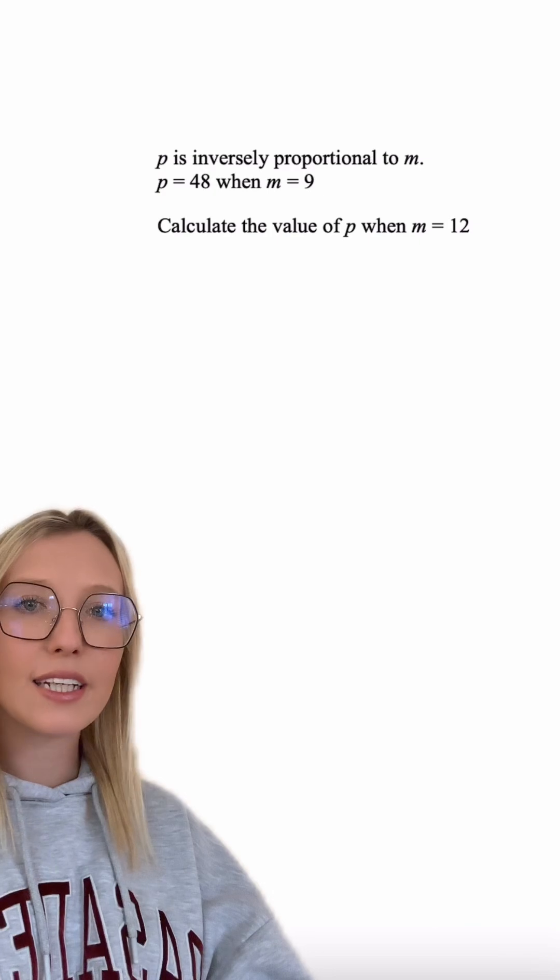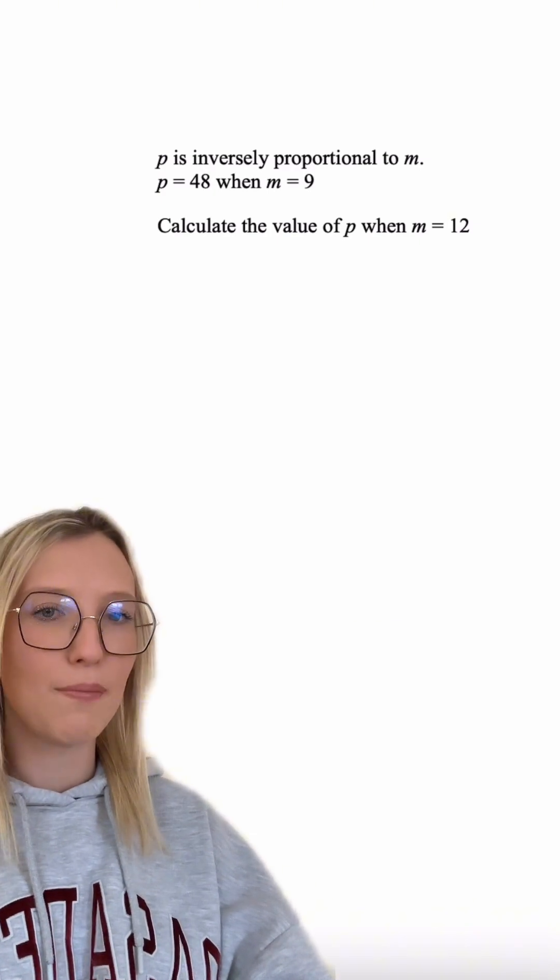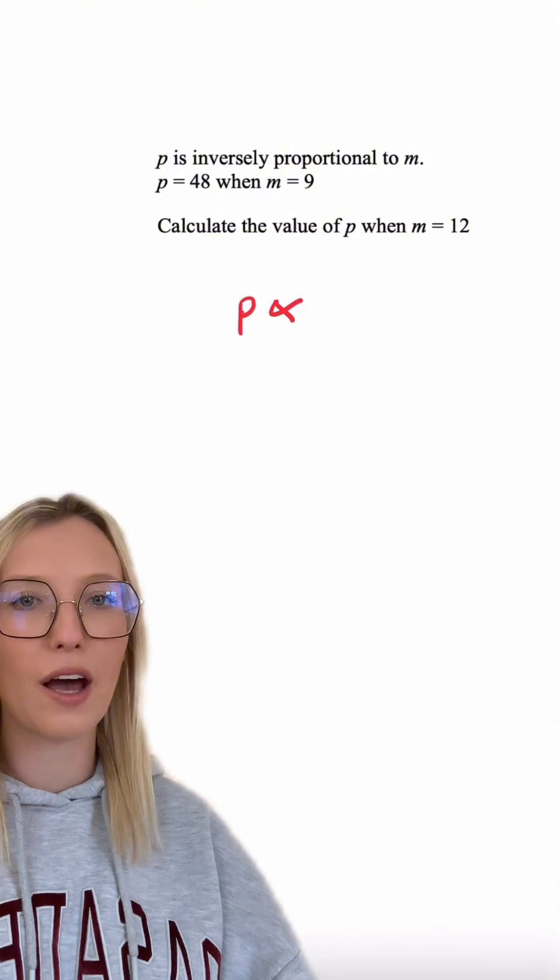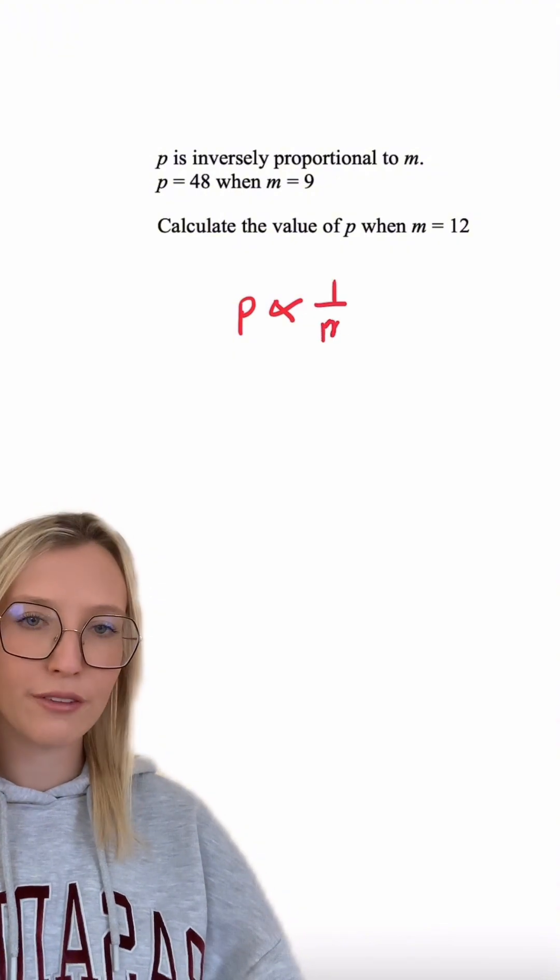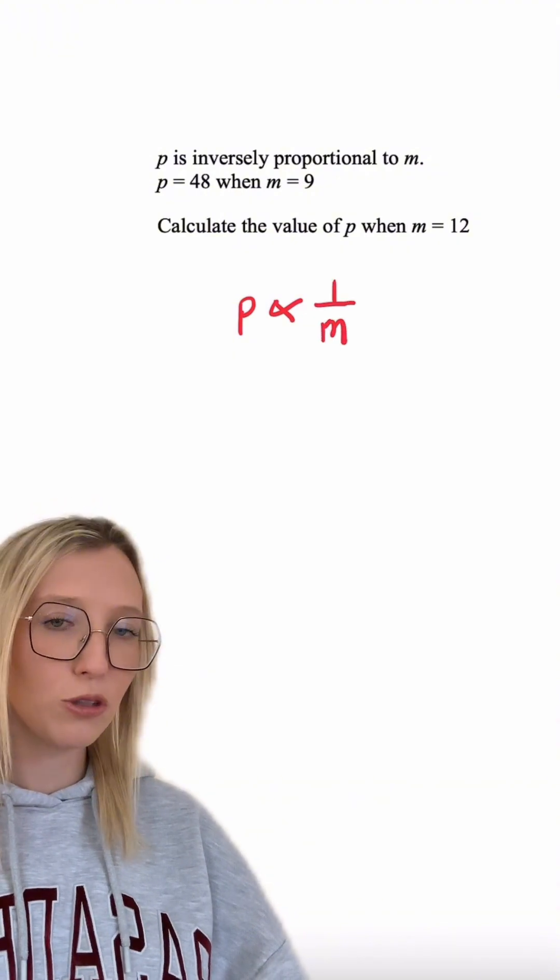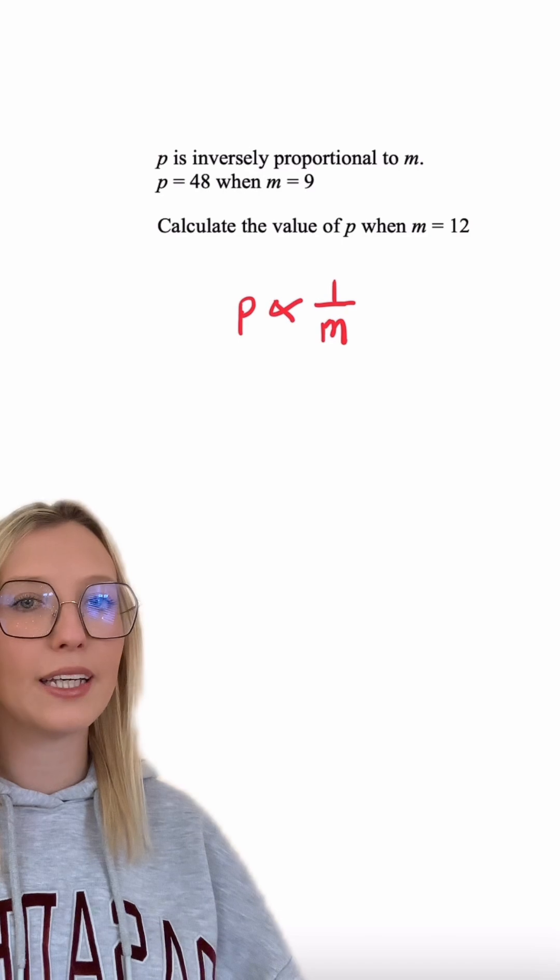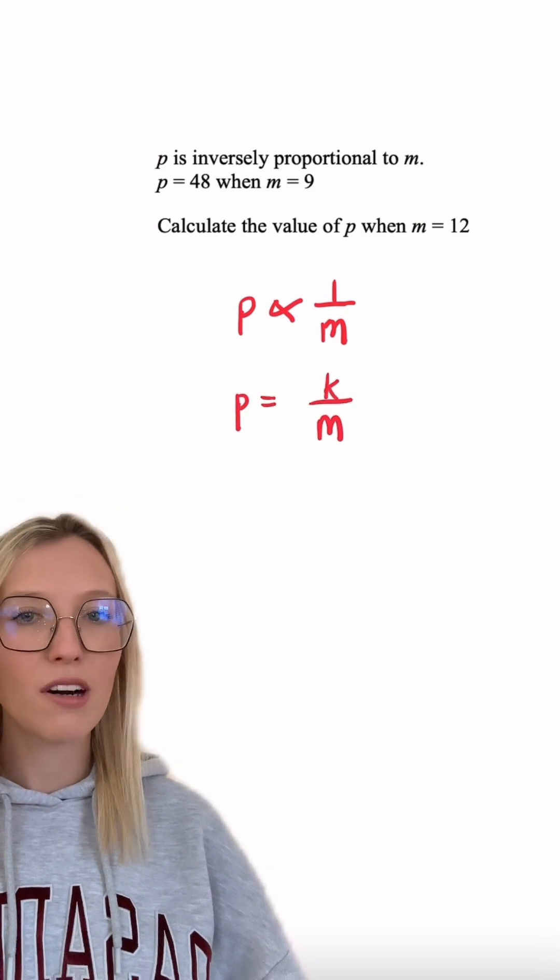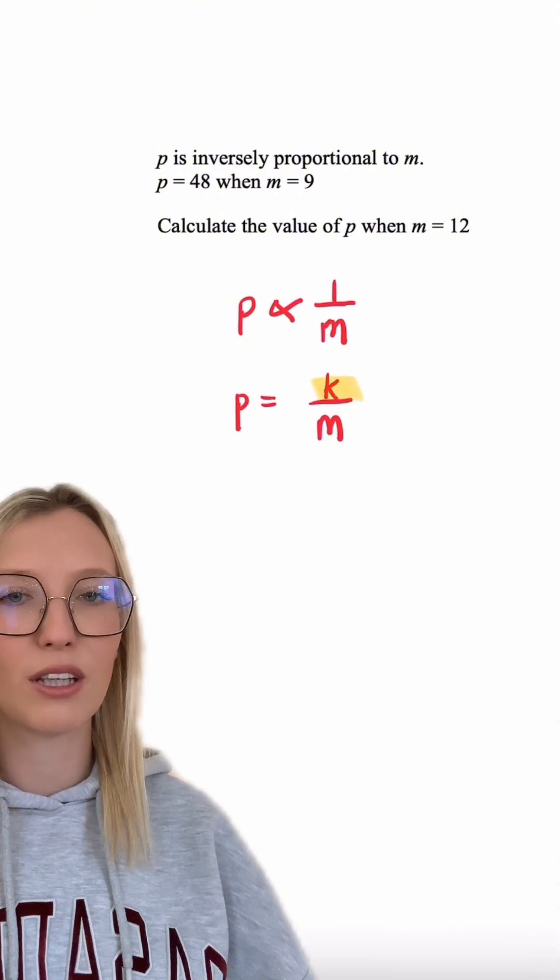In this question we're told that P is inversely proportional to M, so we can write this as P proportional to 1 over M. In equation form, if we want to remove the proportional sign, we can write this as P equals K over M, where K is a value we need to find. We can find this value of K by inputting the values we've given.